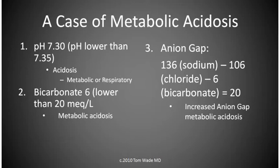Therefore, the patient has an acidosis, either metabolic or respiratory. Second, the bicarb is 6, which is much lower than the lower limit of normal of 20 milliequivalents per liter. So, the patient has a metabolic acidosis. Third, we calculate the anion gap, which is 20. So, she has an increased anion gap metabolic acidosis.